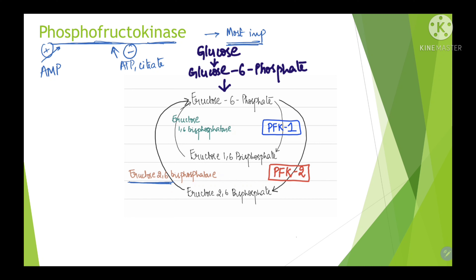Phosphofructokinase is the most important rate-limiting enzyme in glycolysis; it controls the rate of the pathway. AMP mainly activates this enzyme, whereas ATP and citrate mainly inhibit it. This enzyme is also regulated by fructose-2,6-bisphosphate. Fructose-6-phosphate acted upon by phosphofructokinase-2 results in fructose-2,6-bisphosphate, whereas fructose-2,6-bisphosphatase catalyzes the hydrolysis of fructose-2,6-bisphosphate, and fructose-1,6-bisphosphatase catalyzes the hydrolysis of fructose-1,6-bisphosphate.